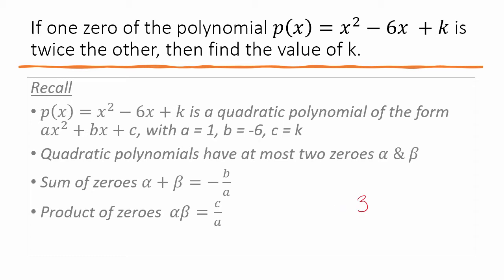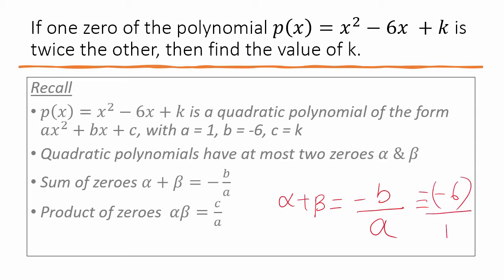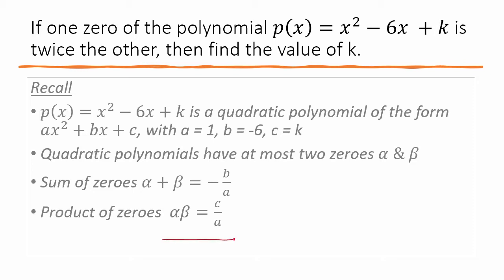Next, the sum of the zeros is given by: alpha + beta = −b/a. And the product of the zeros is given by: alpha × beta = c/a. You should know both of these formulas.